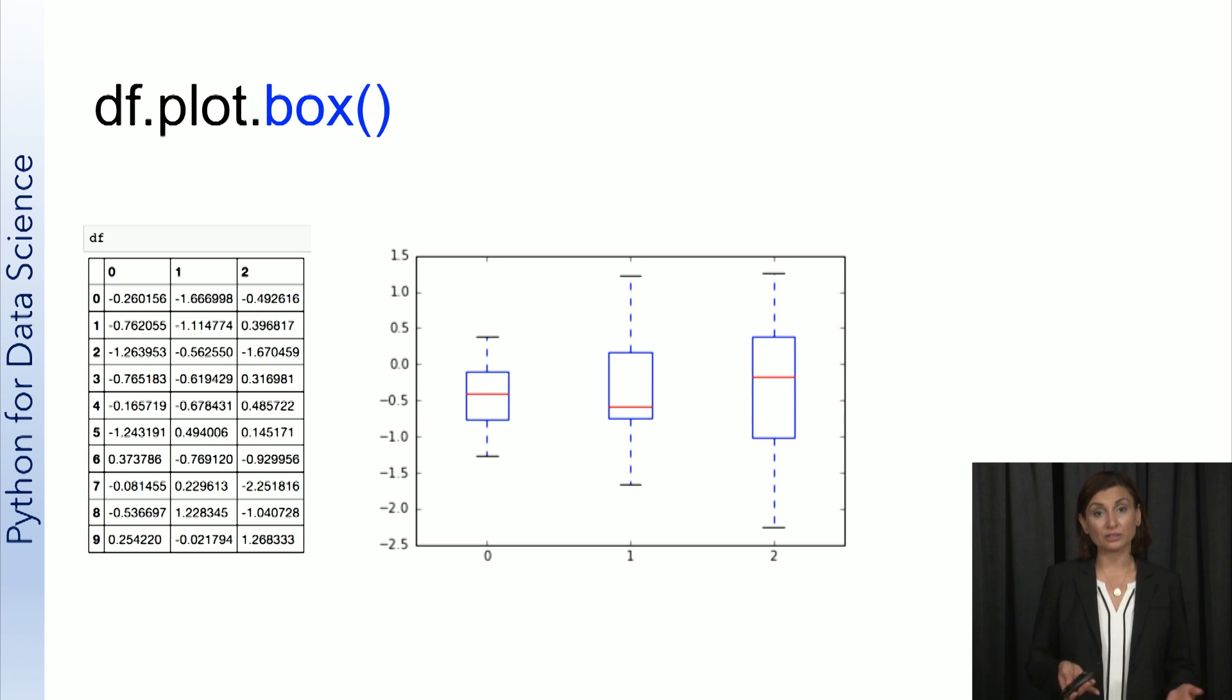Another plot option, box plots generated by the box function, is a good way of showing data distribution. So each box will have minimum and maximum and median for columns if you look at this graph.